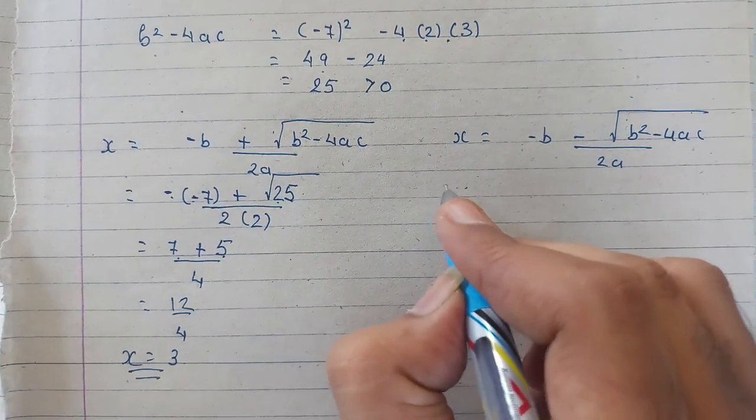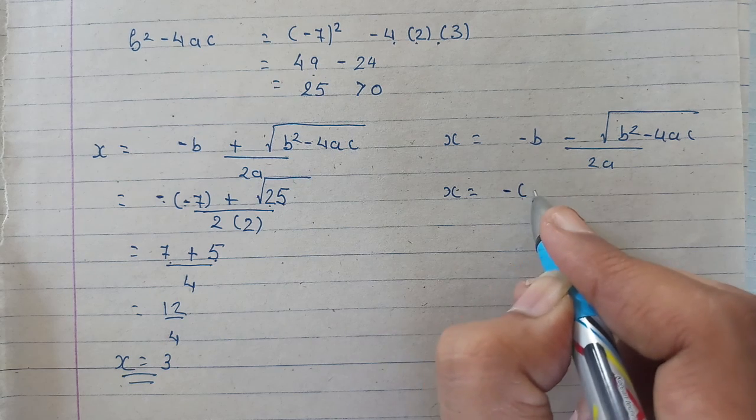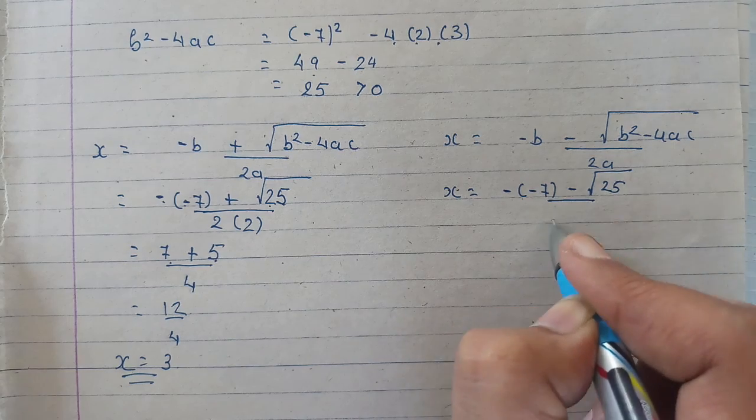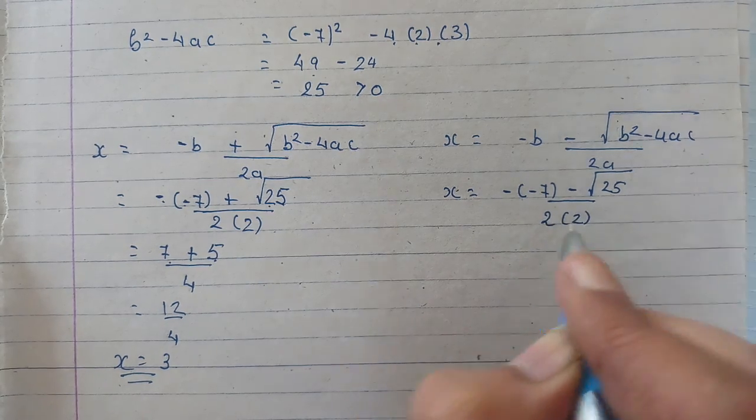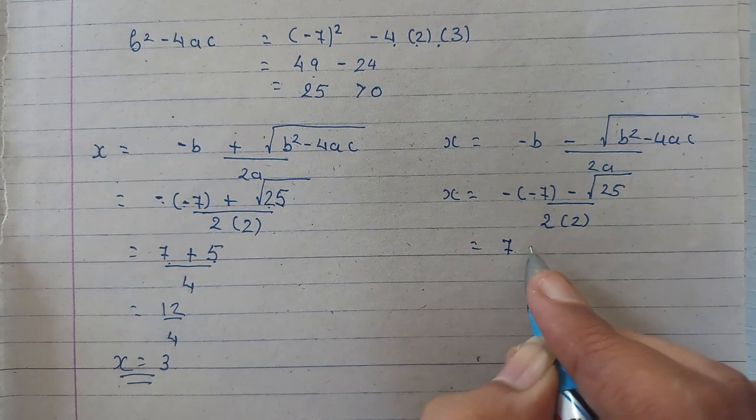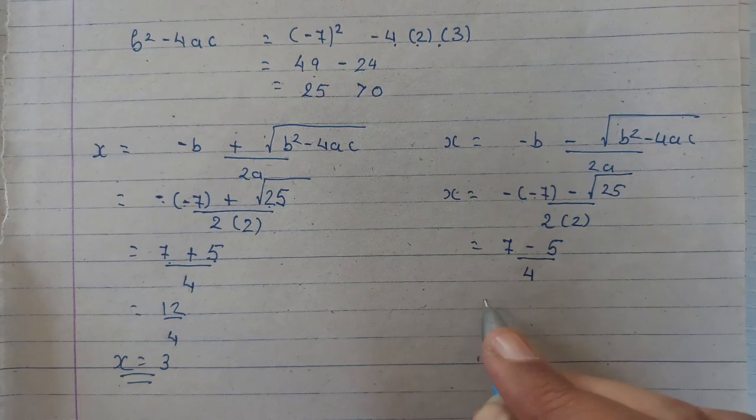Now, to find the second root, same procedure, x is equal to minus b ki jaga pe, minus 7, minus under root 25 upon 2 into 2. Minus and minus becomes positive 7, minus 25 ka root, that is 5 upon 4.